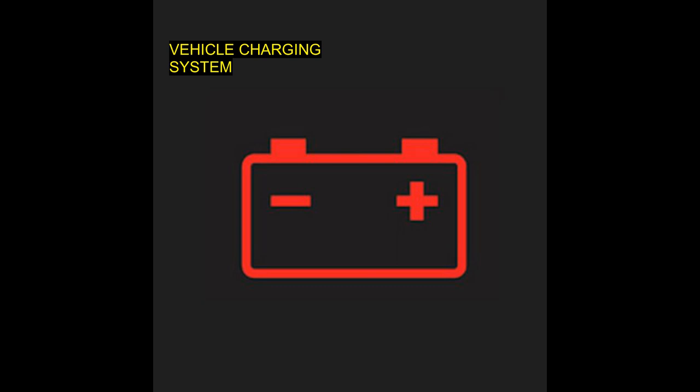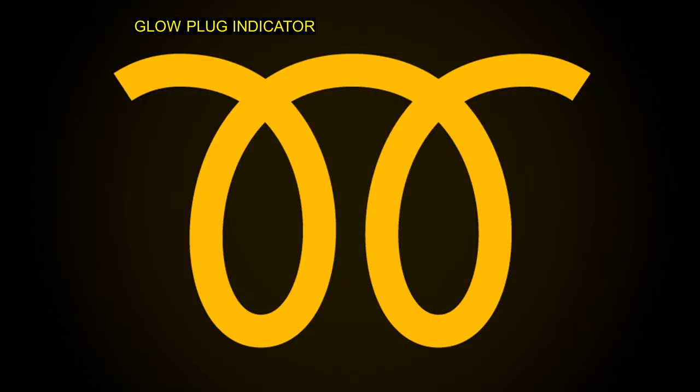The battery bulb is on the side of the dashboard. If the battery is not charging, it will show on the dashboard. The power plug indicator applies to both diesel engine and petrol engine vehicles.